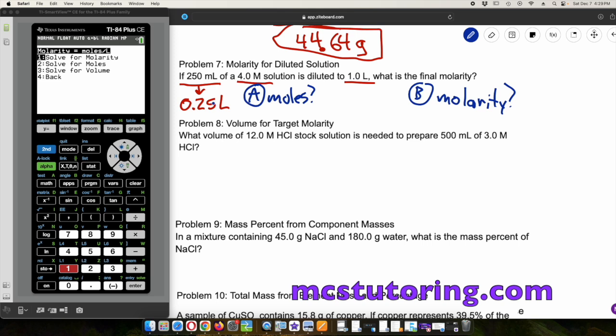First we're going to solve for moles. The molarity is four, and then the volume is 0.25 because that's how many liters it is. Just be careful with that. If you've ever seen milliliters for the program sake, you want to convert to liters. We've got one mole. So that's one for the first question.